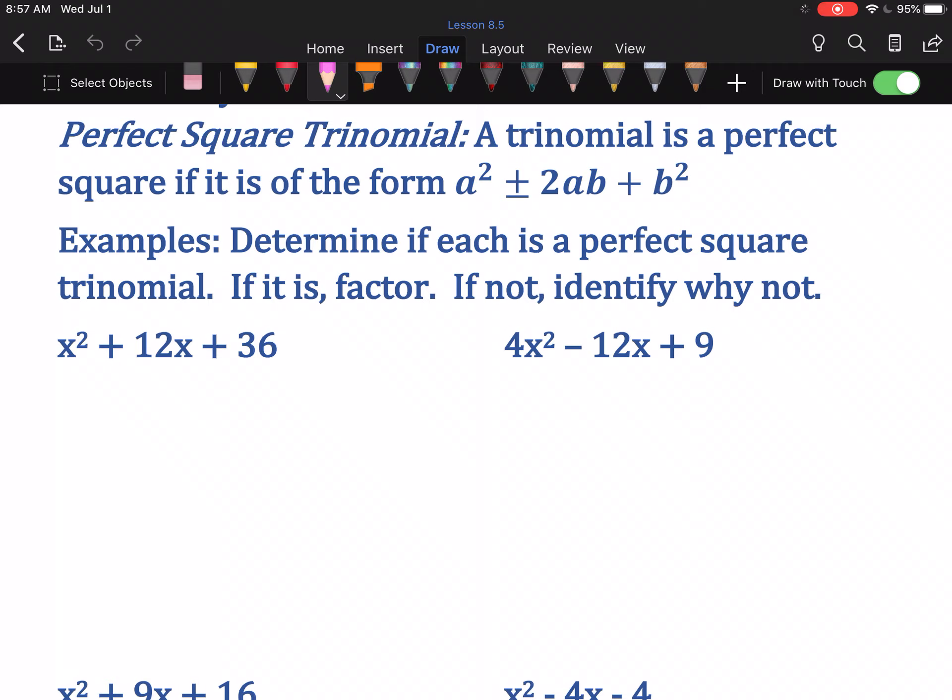The middle term is 12x. The square root is x, the square root is 6. If I take these two, combine them and double—by combining I just mean multiply—do I get the middle term? 6 times 2 is 12, with the x is 12x. That's what I need to see.